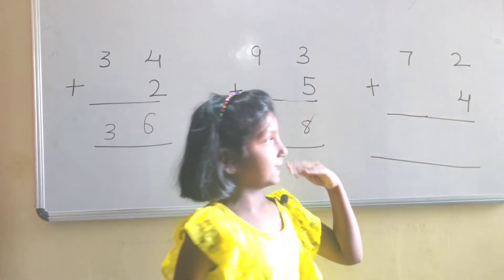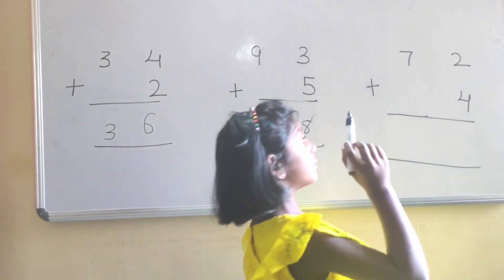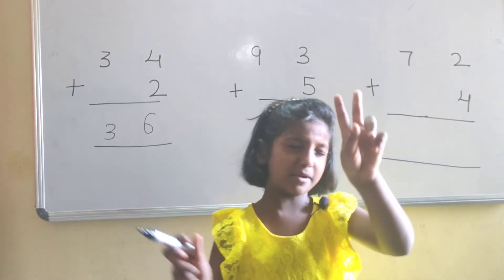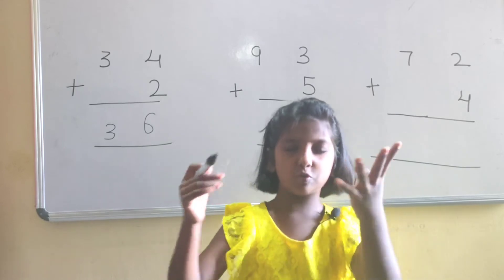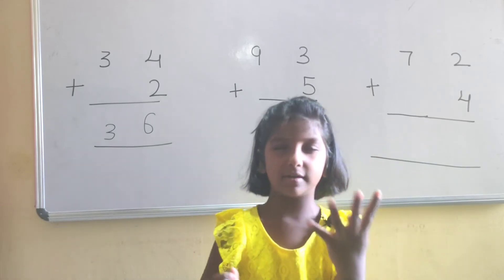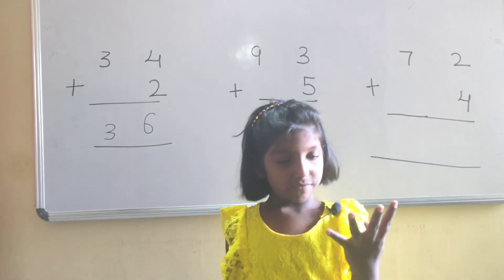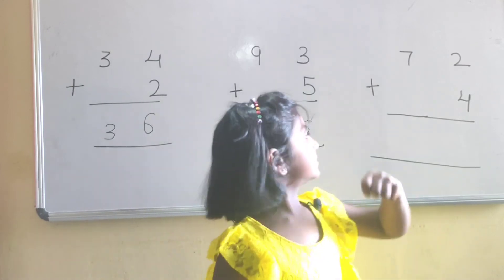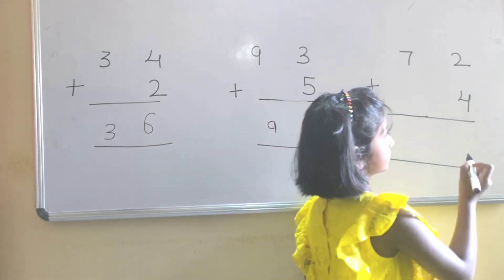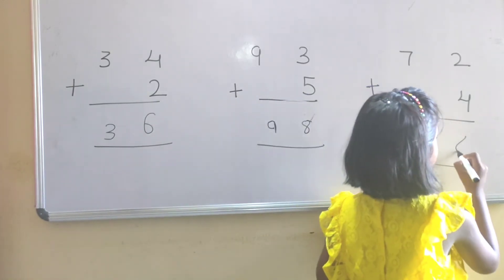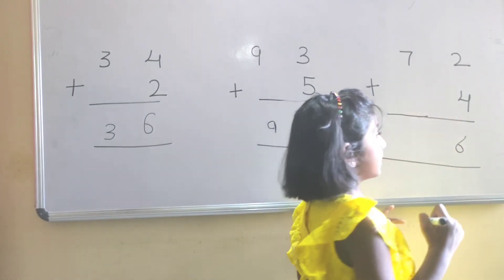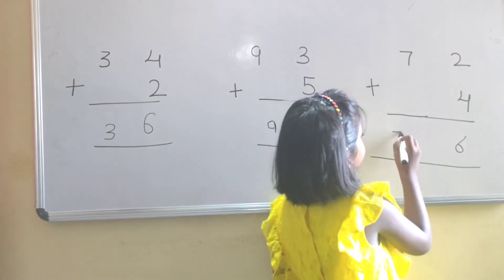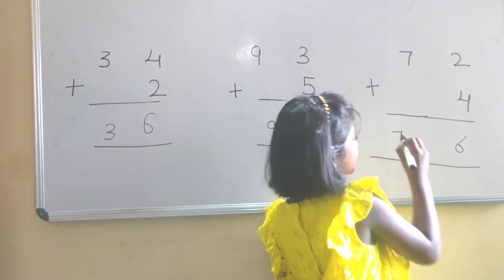Let's see the next problem: 7, 2, 4. 2 in mind, 4 in hand. 2, after 3, 4, 5, 6. The answer is 6. Here there is no number to add, that's why we keep writing 7.